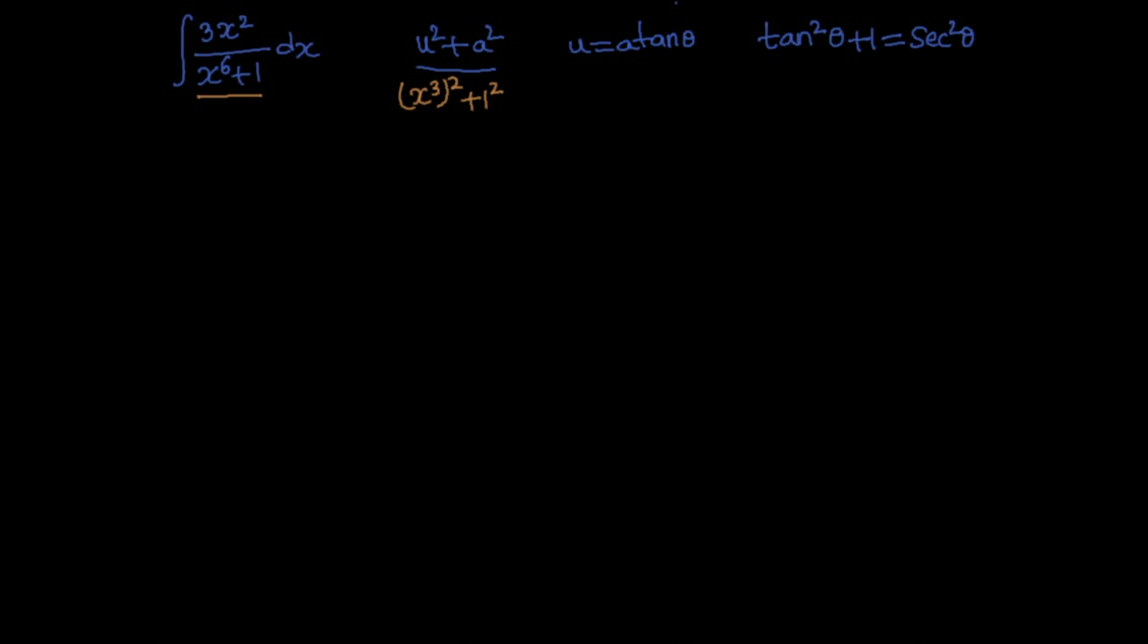And from this you can take the value of u as x cube and substitute it equal tan theta. So differentiating on both sides with respect to theta you get 3x square dx is equal to secant square theta d theta.